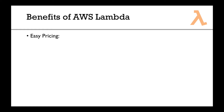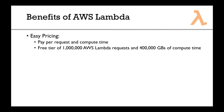Let's talk about the benefits. There's really easy pricing — you pay for two things: requests and compute time. A request is when someone invokes your Lambda function. You have a free tier of 1 million AWS Lambda requests and 400,000 gigabyte-seconds of compute time.